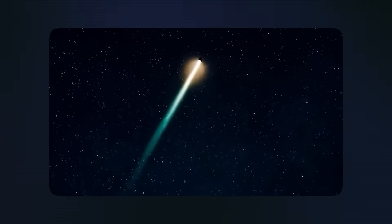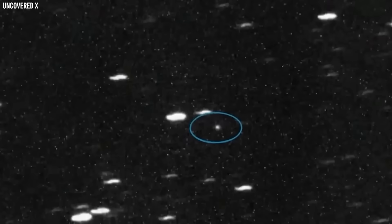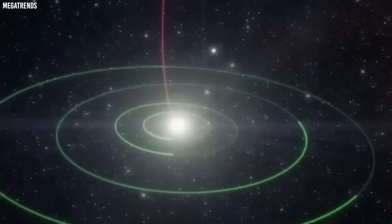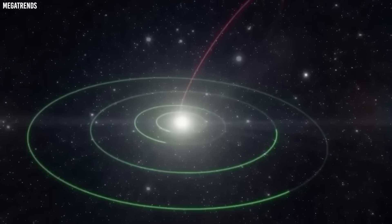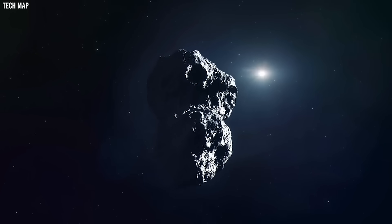SWAN passed its closest point to the sun on September 12th, which means it's already survived the most dangerous part of its journey. Now it's heading our way, and it should reach its closest approach to Earth around October 20th. At that point it will be about 24 million miles away.